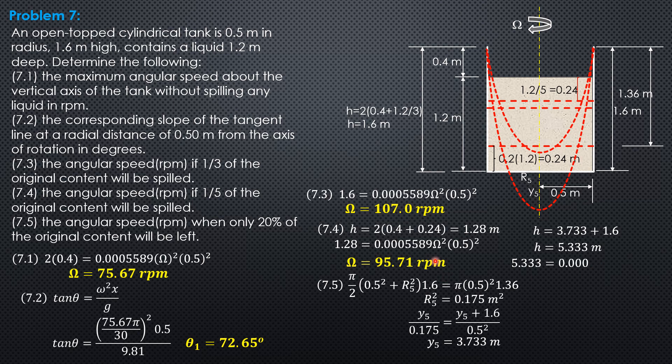Substitute, 5.333 equals 0.0005589 omega square, 0.5 square. And we can now finally compute omega. So this is just one analysis. This is my way of thinking the problem. There are other ways of analyzing this situation, but make sure that the final answers are the same.